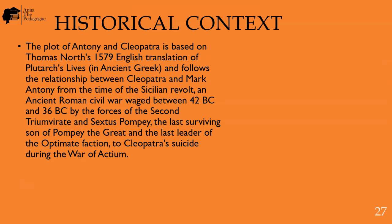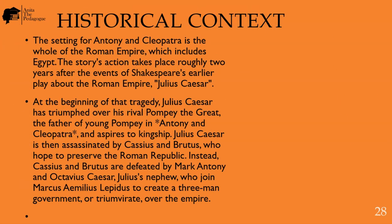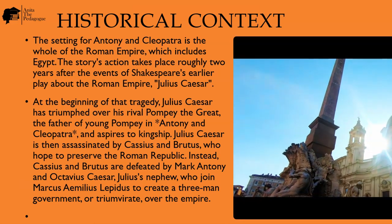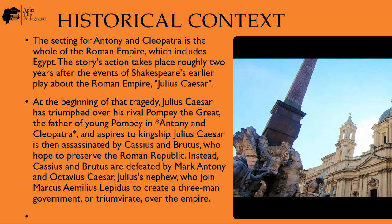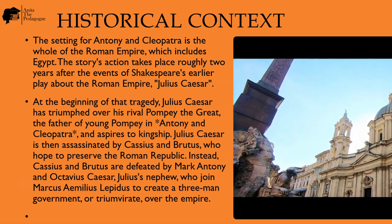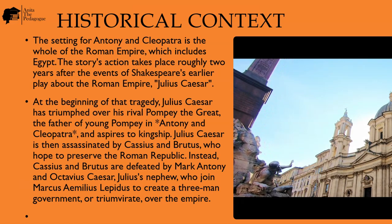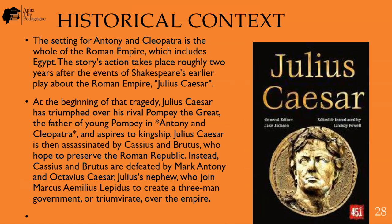The story extends to Cleopatra's suicide during the War of Actium. The setting for Antony and Cleopatra is the whole of the Roman Empire, which includes Egypt. The story's action takes place roughly two years after the events of Shakespeare's earlier play about the Roman Empire, titled Julius Caesar.